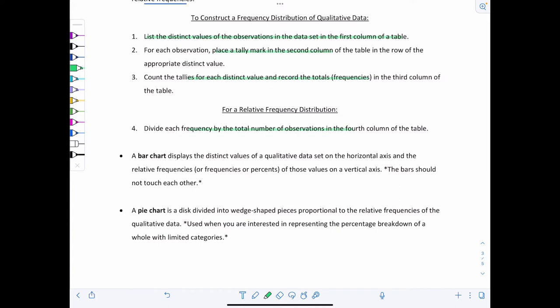Don't stress about writing down all these steps. We're going to work through an example and you'll get it just by looking. And then other types of graphs that you can construct. A bar chart displays the distinct values of a qualitative data set on the horizontal axis and the relative frequencies, or you could do frequencies or percents, of those values on the vertical axis. Big thing to remember is that the bars should not touch each other. No touching. And then a pie chart, you've probably seen before plenty of times, is a disk that's divided into wedge-shaped pieces and they're proportional to the relative frequencies of the qualitative data. And you use a pie chart when you're interested in representing the percentage breakdown of a whole with limited categories.